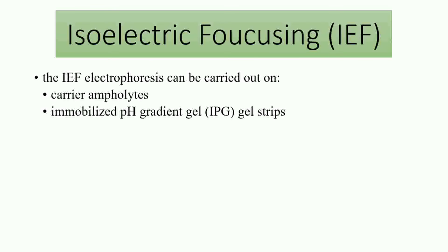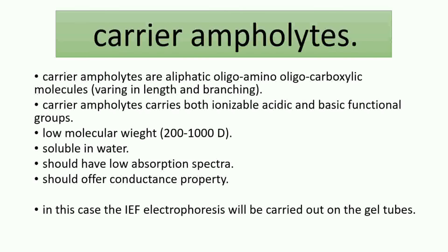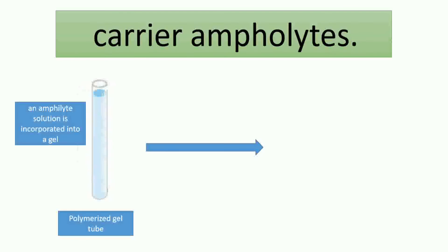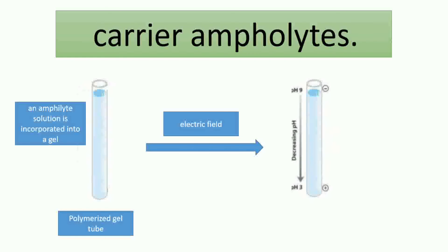There are two different media for isoelectric focusing electrophoresis. The first is carrier ampholytes — aliphatic oligo-amino, oligo-carboxylic molecules that vary in length and branching, so their amino and carboxylic groups are ionizable to provide acidic and basic functions. These molecules should be low in molecular weight, soluble in water, have good conductance properties, and have low absorption spectra. The ampholyte solution is incorporated into a gel to form a polymerized gel, and once an electric field is applied, the ampholytes provide a pH gradient for protein separation.